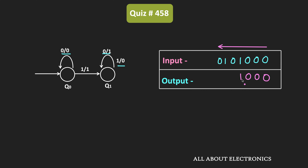It will now do a transition into the q1 state. In the q1 state, when the input is 0, the output of the machine is equal to 1. And similarly, when the input is equal to 1, the output of the machine is equal to 0. So when the input is 0, the output is 1, and whenever the input is 1, the output is 0.